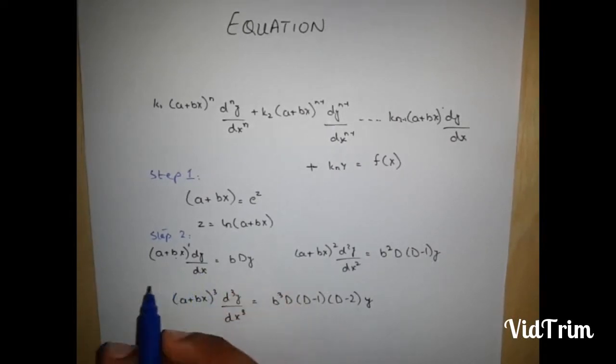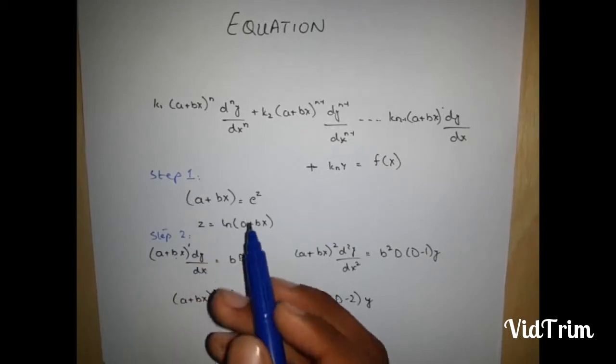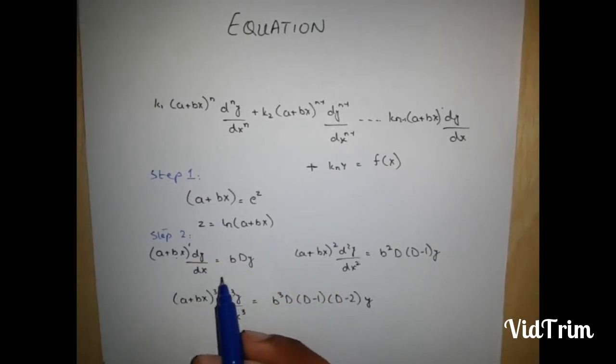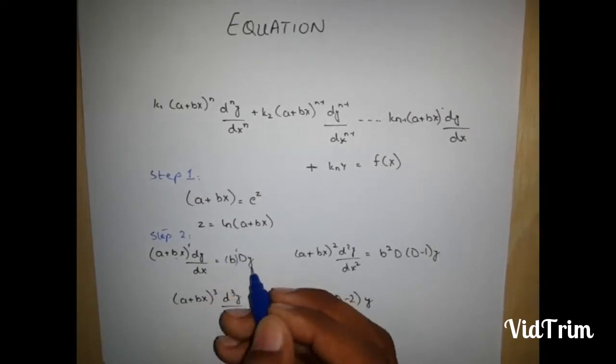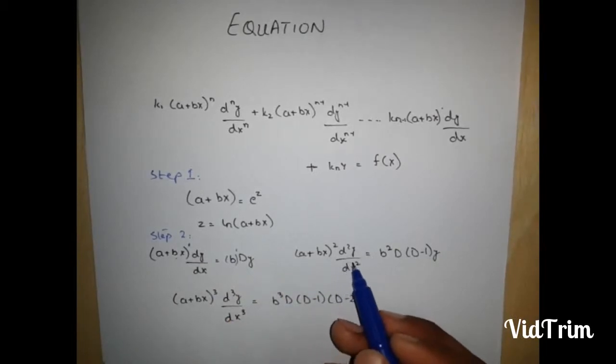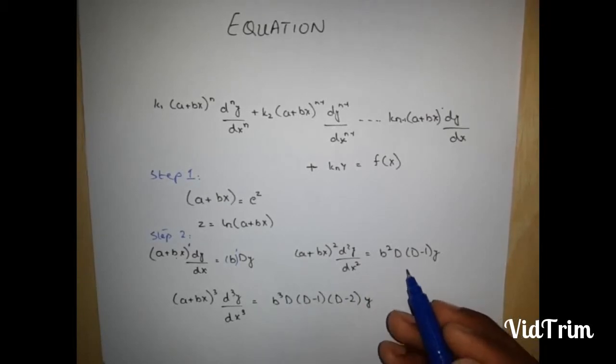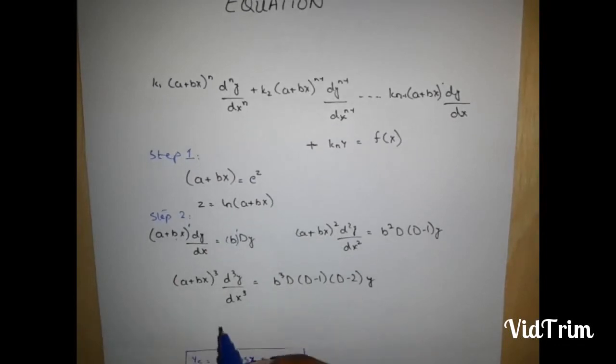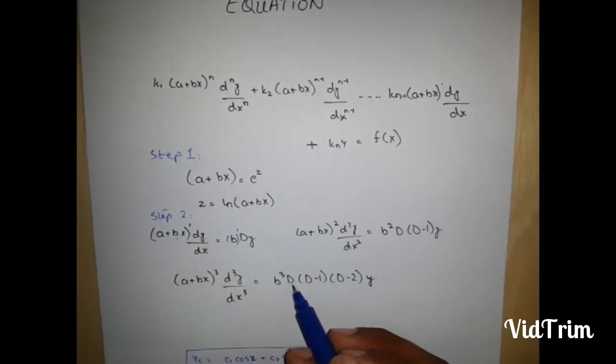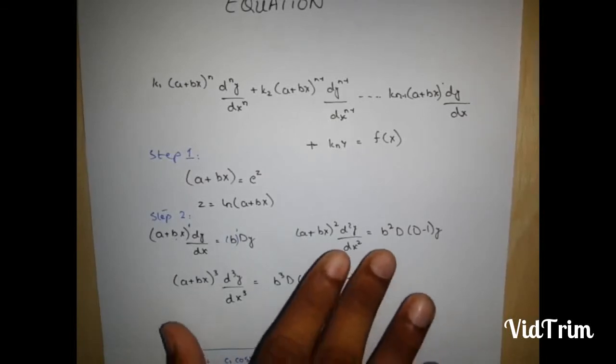Step number 2: If you have a plus bx and n is equal to 1, then you can write it as b to the power n which is 1 dy. And if you have square over here, then you have to write b square d d minus 1 into y. And if you have cube here, so b cube d d minus 1 into d minus 2 into y, and so on.